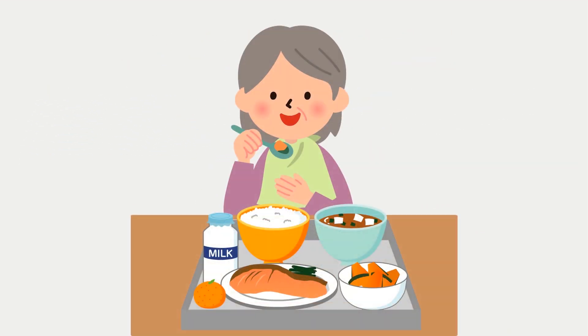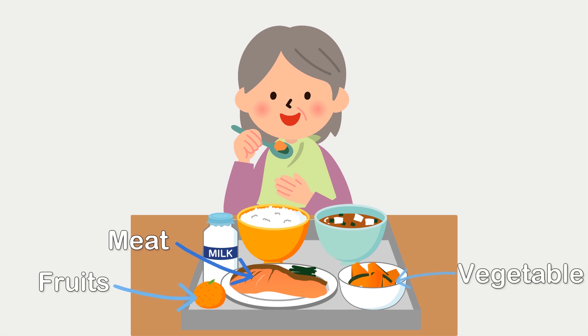People are omnivorous, containing flat and sharp teeth and the ability to digest meat, fruit, and vegetables.